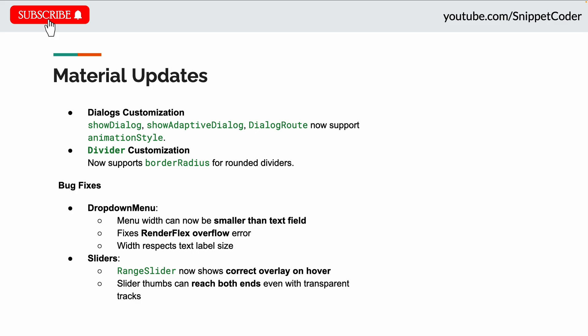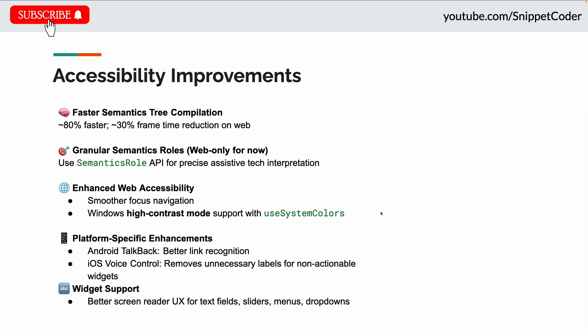You can now customize dialog animations and even apply border radius to dividers — small touches that add polish. Bug fixes include: dropdowns in menus can now be narrower than the text field without an overflow error, and range sliders show only one overlay when hovering over a slider thumb, even with transparent tracks.